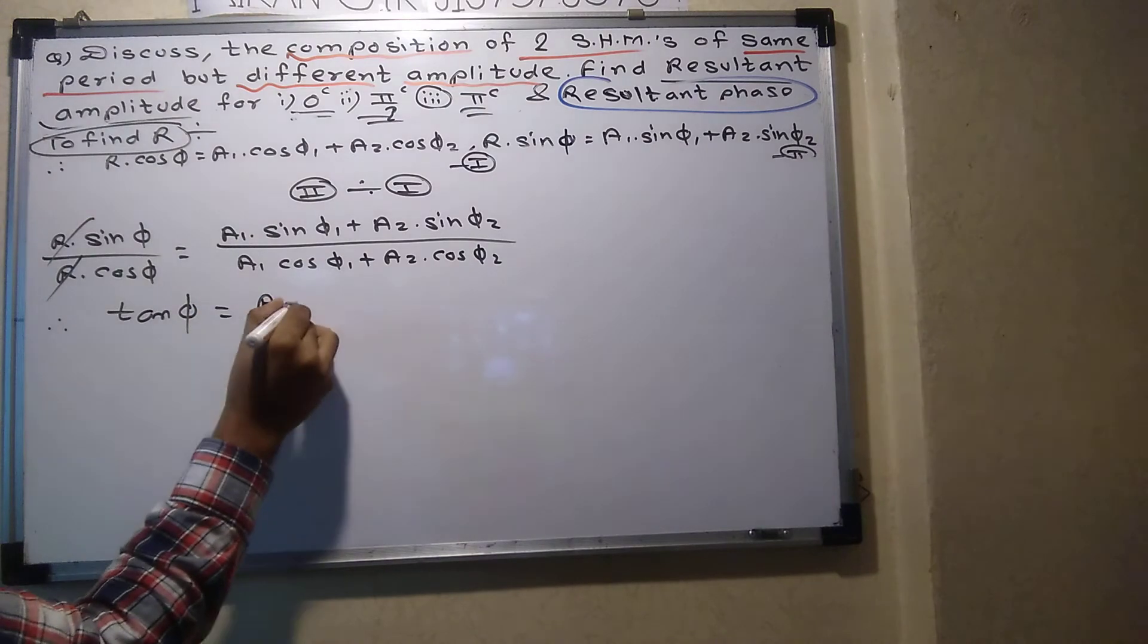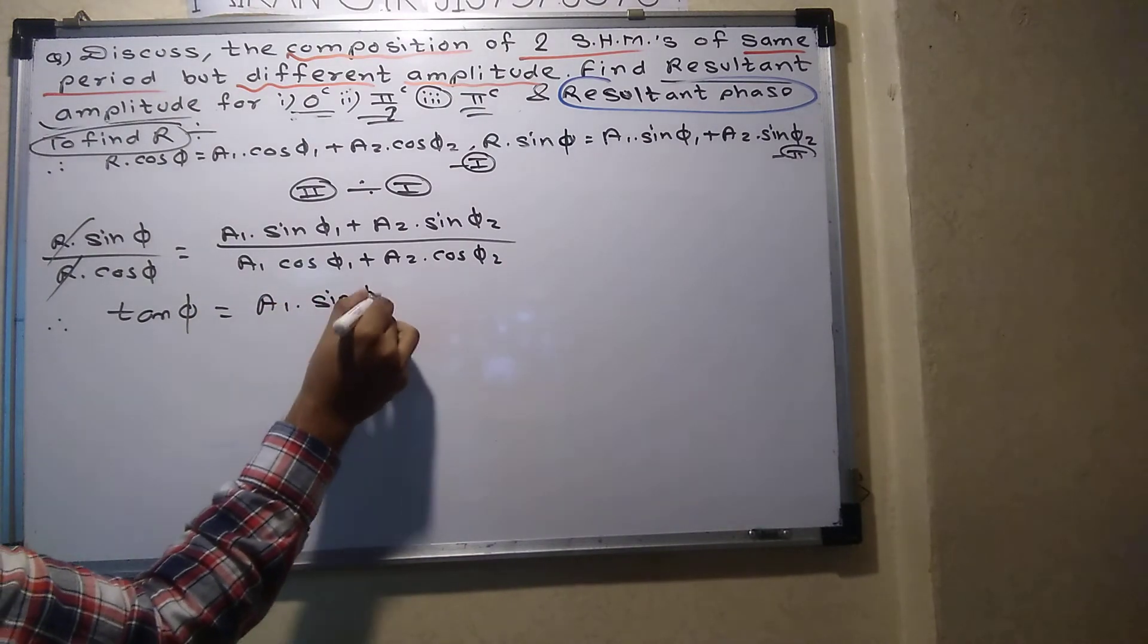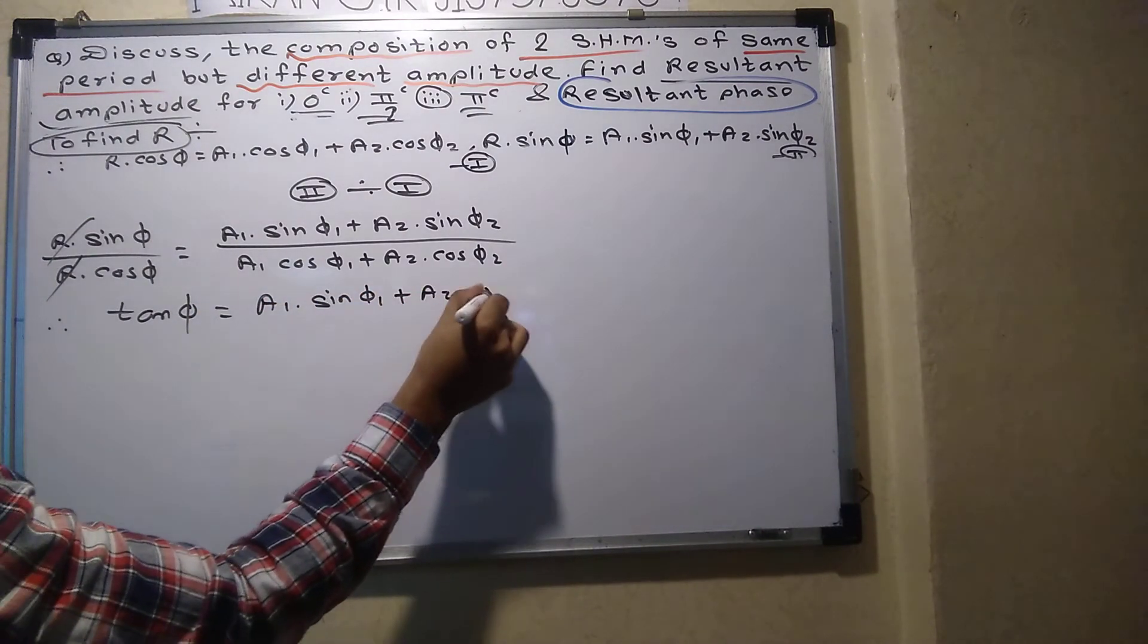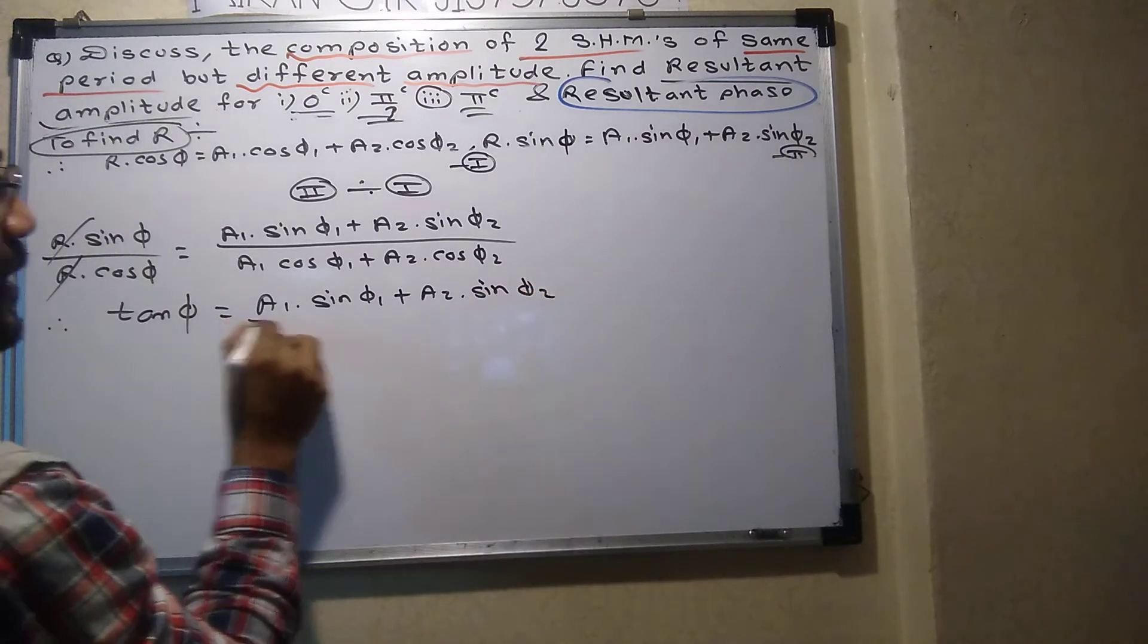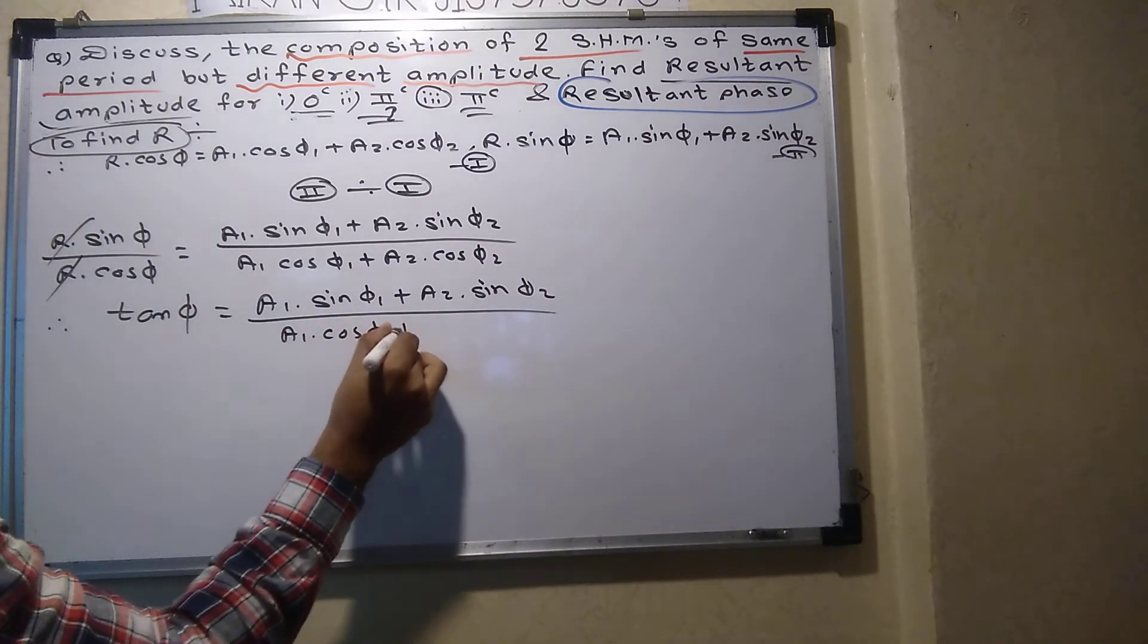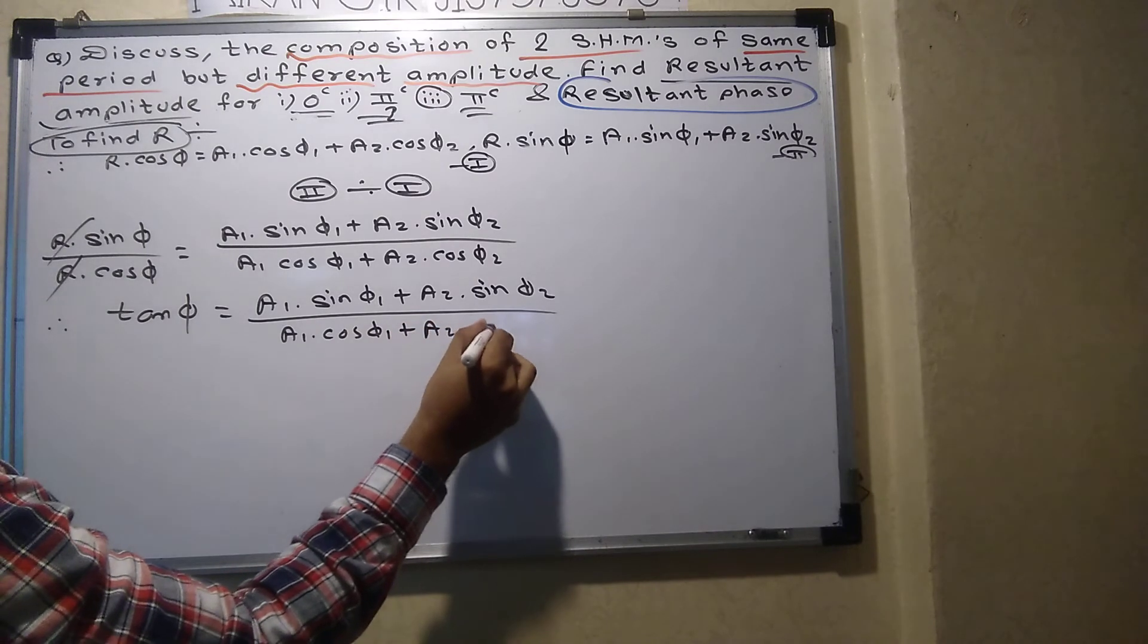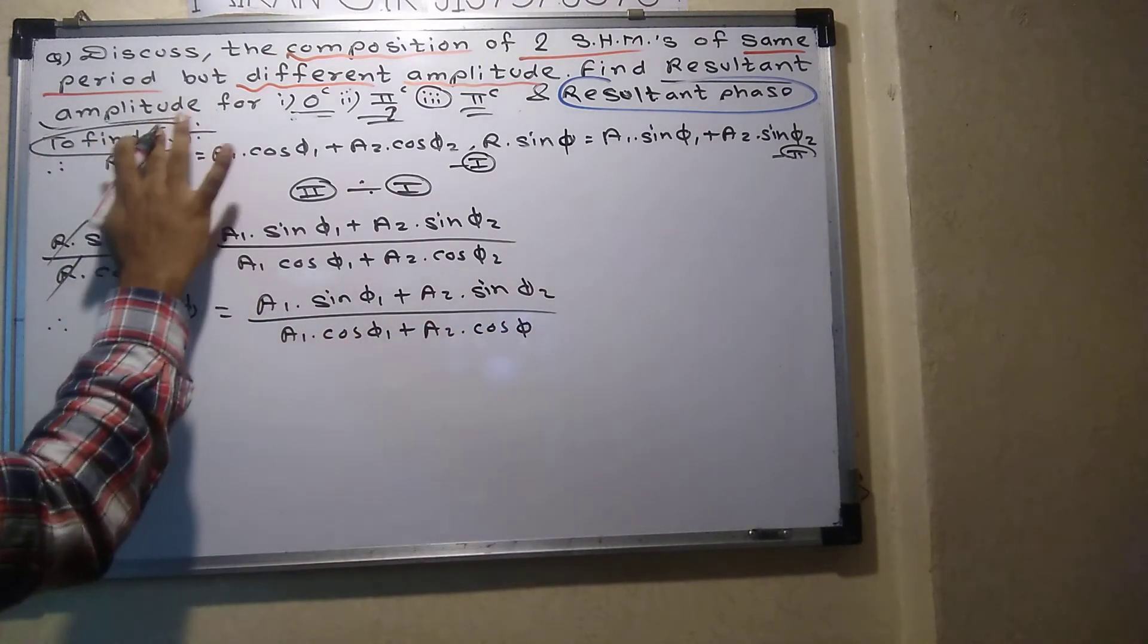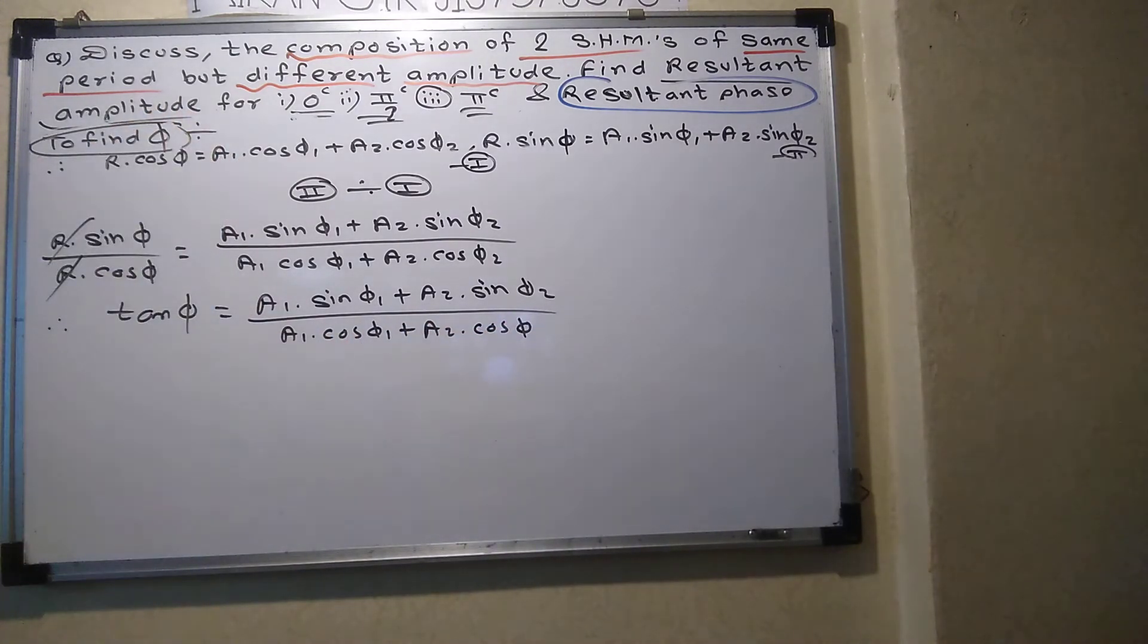So what will the final answer? A1 sin phi 1 plus A2 into sin phi 2 divided by A1 into cos phi 1 plus A2 into cos phi 2. We are finding what? Resultant phase, that is phi.